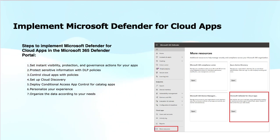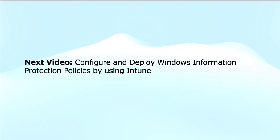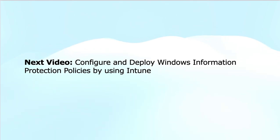Fifth, deploy Conditional Access App Control for catalog applications under certain conditions. Sixth, personalize your experience and organize the data according to your requirements. In the next videos I will cover the practice lab demonstrations of this learning path of MD102. These practice labs will cover: configuring and deploying Windows Information Protection policies through Intune, configuring endpoint security using Intune, and configuring disk encryption using Intune. As far as cloud app security labs are concerned, they are not part of this MD102 program, but in SC200 for Microsoft Information Protection the labs are available.